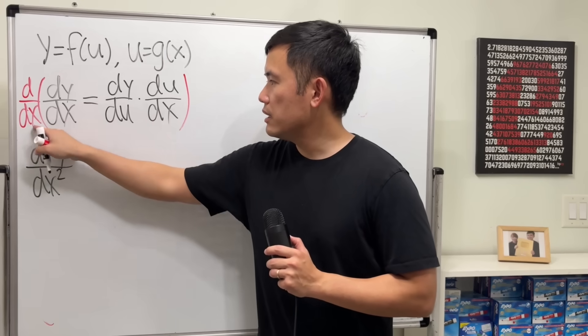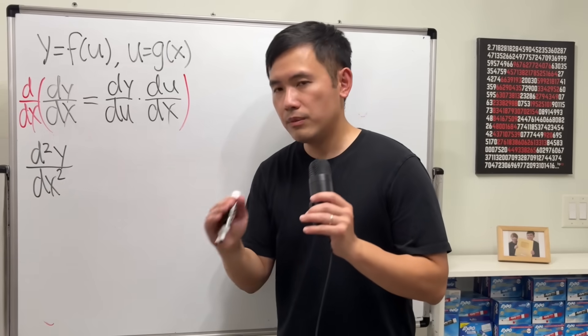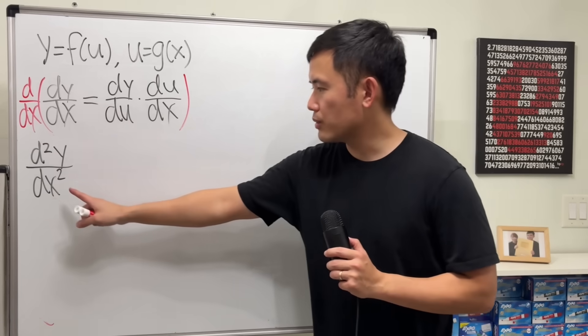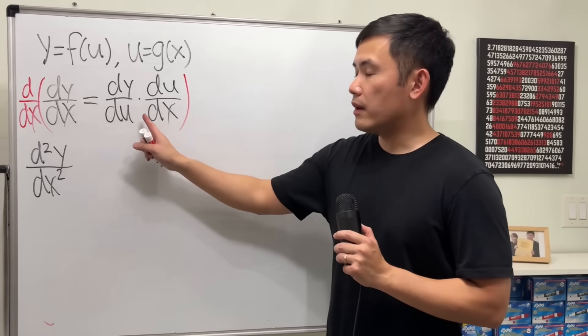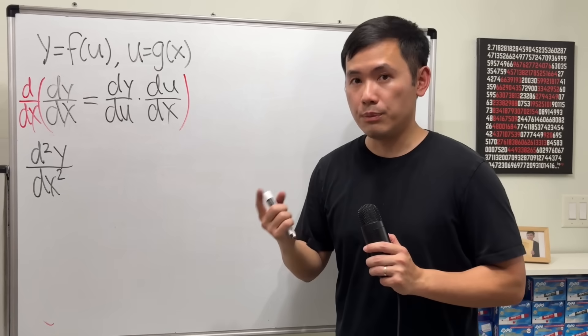d and d, d2. dx dx, dx2. Right here on the bottom, don't use the parentheses. Nobody does that. So write it down like this. It's perfect. Now, on the right-hand side, we have a product of two things, so we have to use the product rule.